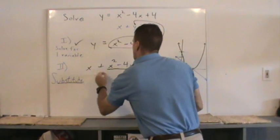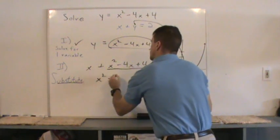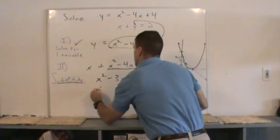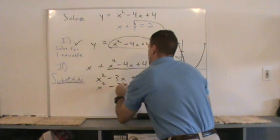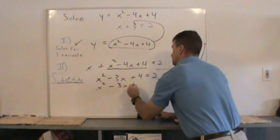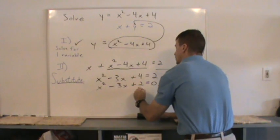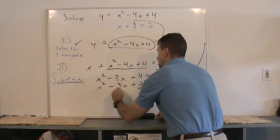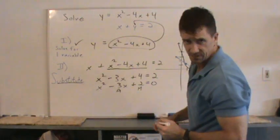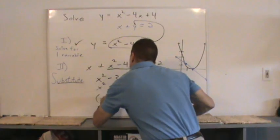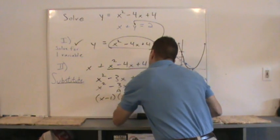Let's see. Combine like terms. I got x squared minus 3x plus 4 equals 2. Subtract 2 on both sides. x squared minus 3x plus 2 equals 0. I can factor that. Two numbers that multiply to a positive 2 but add up to negative 3. How about negative 1 and negative 2? x minus 1, x minus 2.